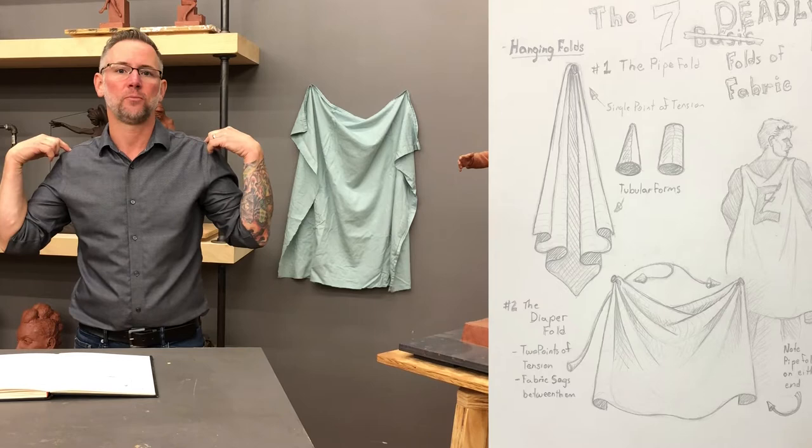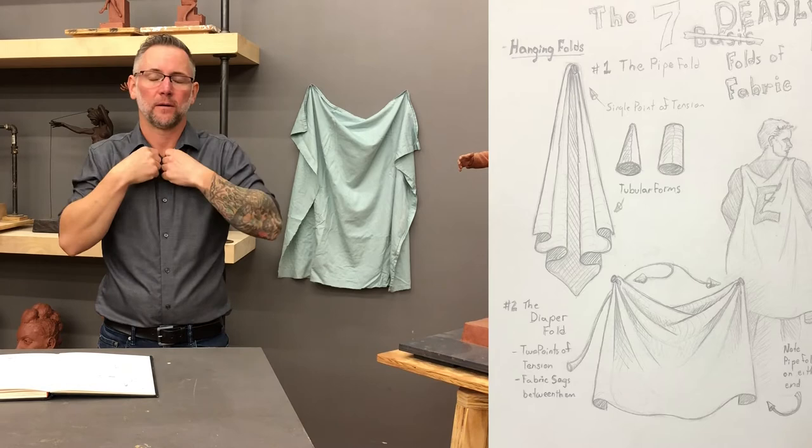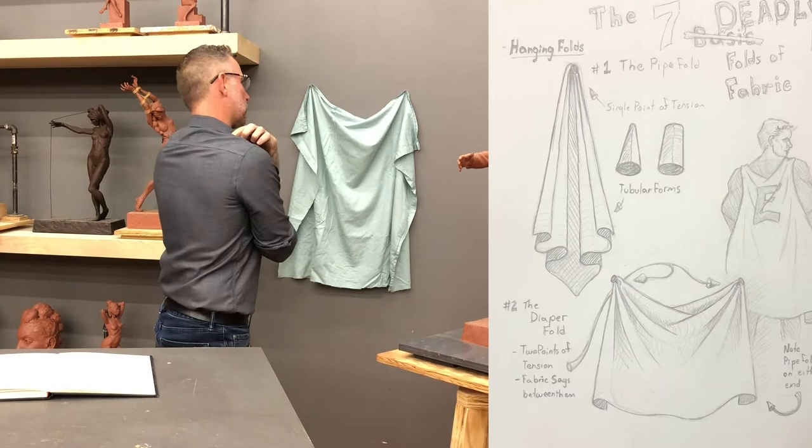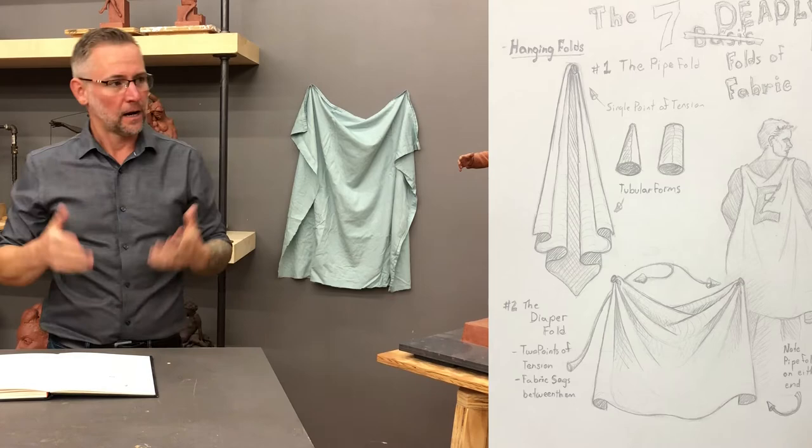Where the cape attaches — or a bandana, whatever it is — it basically has one point of tension coming up and around, and because it sits over the trapezius, this becomes the point of tension, and then it sags in between, and you get a superhero cape.